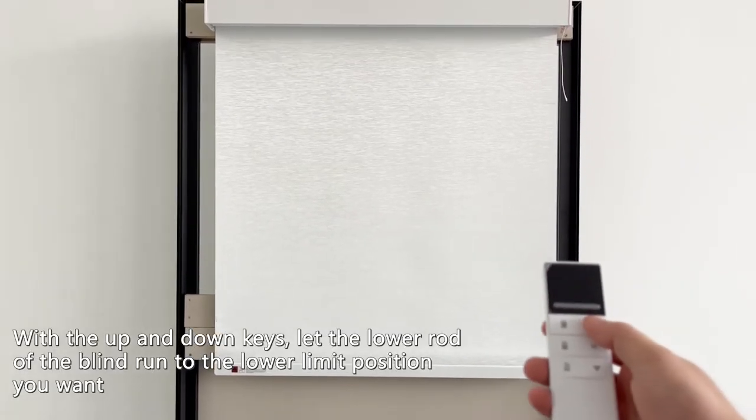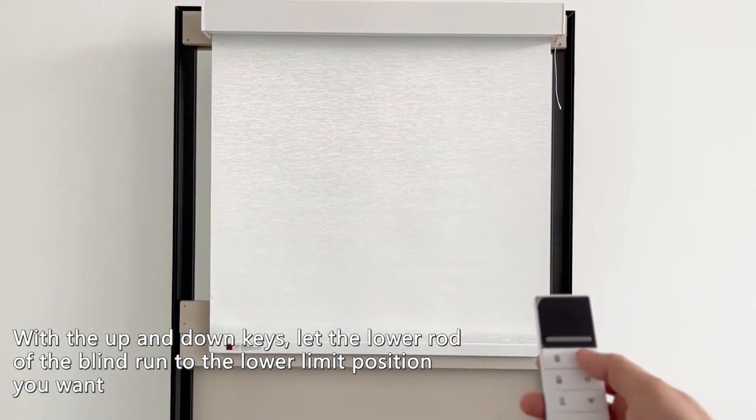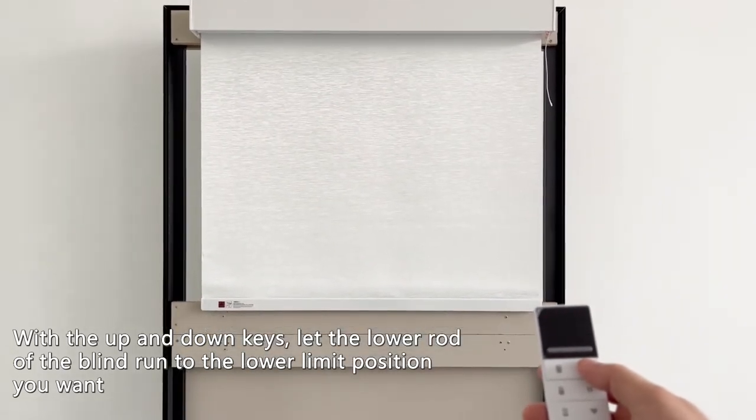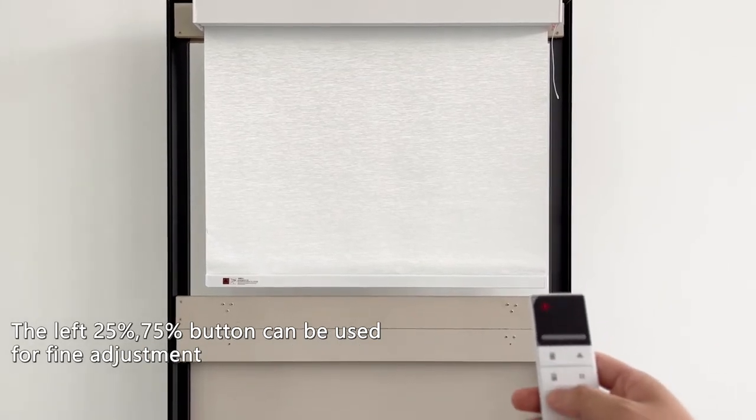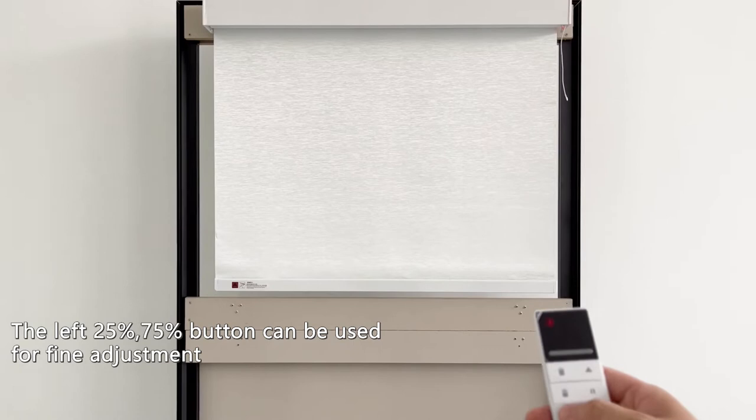With the up and down keys, let the lower rod of the blind run to the lower limit position you want. The left 25%, 75% button can be used for fine adjustment.